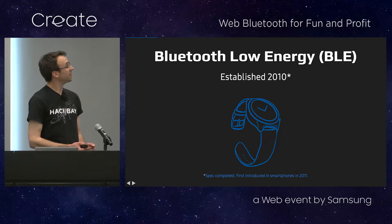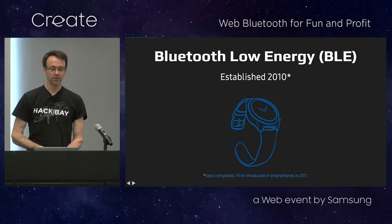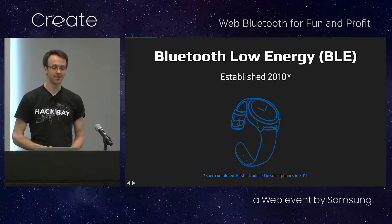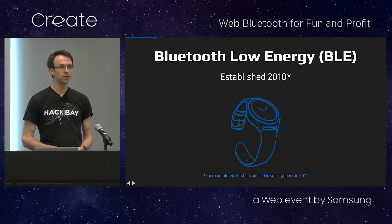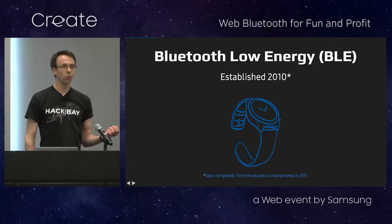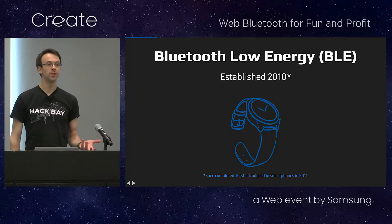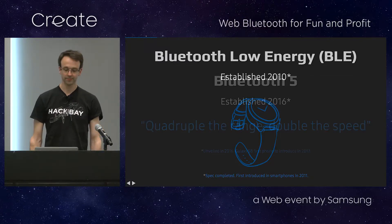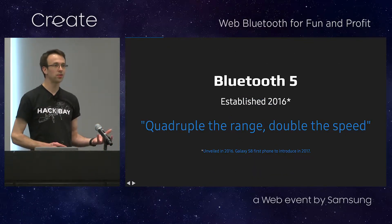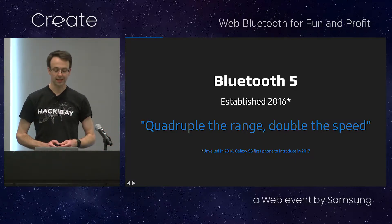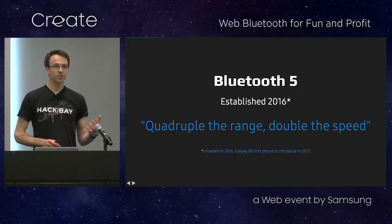Since then we've had some new innovations around Bluetooth. In 2010, we had the Bluetooth Low Energy standard established as part of the Bluetooth 4 spec. This let Bluetooth work very efficiently for low-powered devices, small devices, things that can be powered just by small batteries. More recently, we had Bluetooth 5 introduced, and in fact the first phone to introduce it was the Galaxy S8, which promises quadruple the range and double the speed.